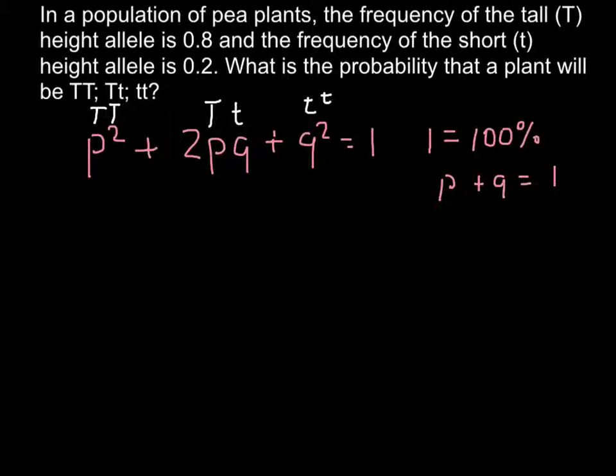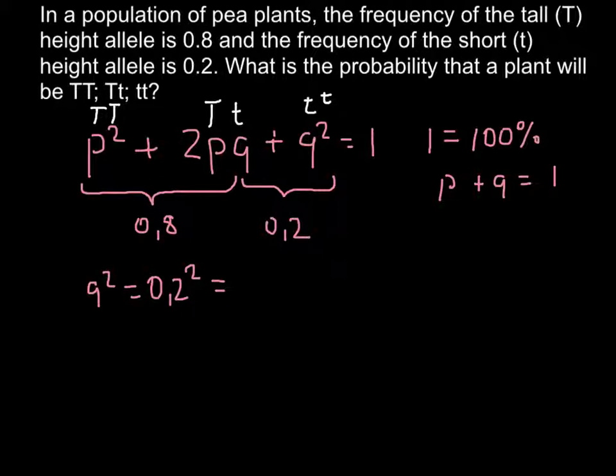Let's use this formula to find all the frequencies. This is very easy, as long as we know that the frequency of capital T in this gene pool is 0.8, and the frequency of the q allele is 0.2. We can find the frequency of q squared by squaring 0.2, which equals 0.04.